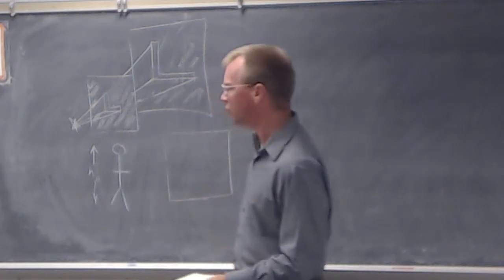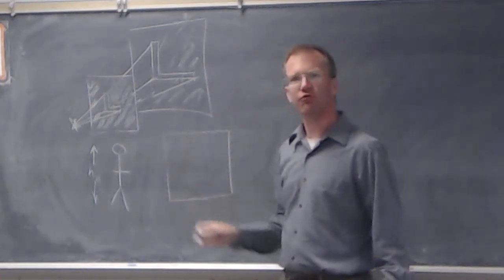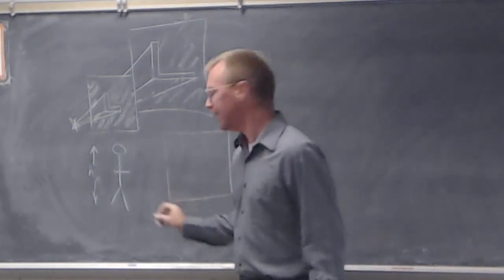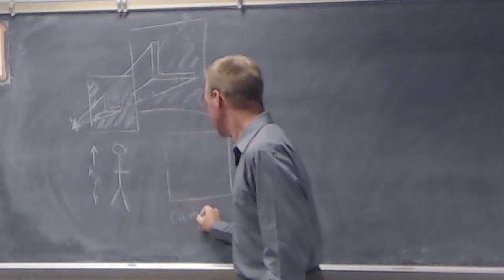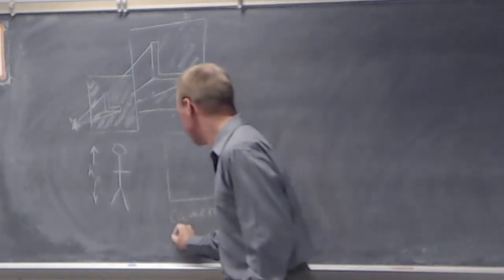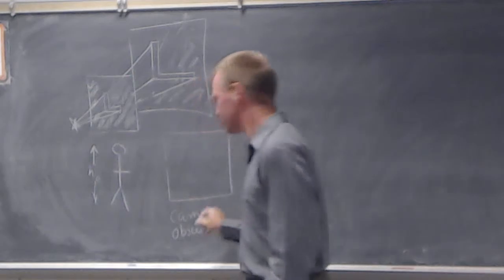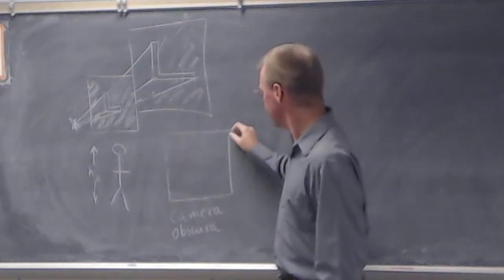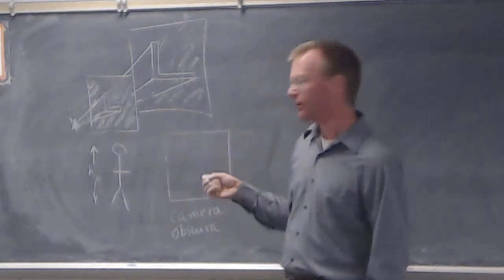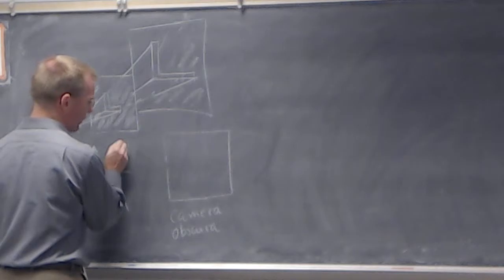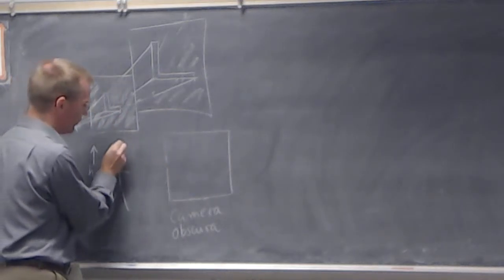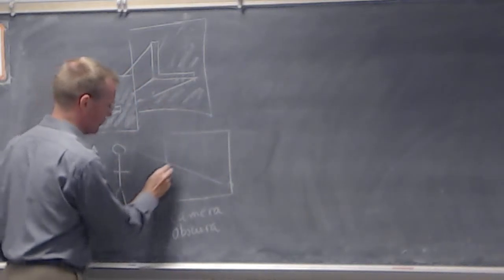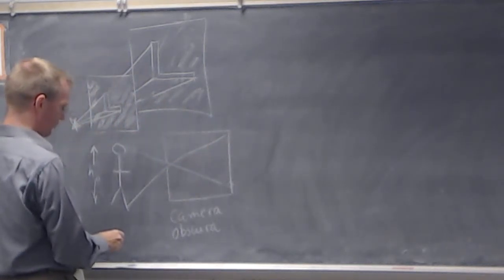I need to have a dark room so that I don't have any other sources of light. The dark room in Latin is called camera, which means room — obscura — which means dark. So you've got a small hole, the aperture, and then the wall that's your screen.